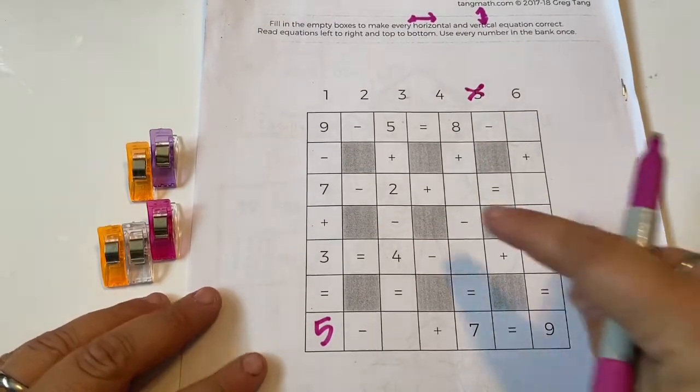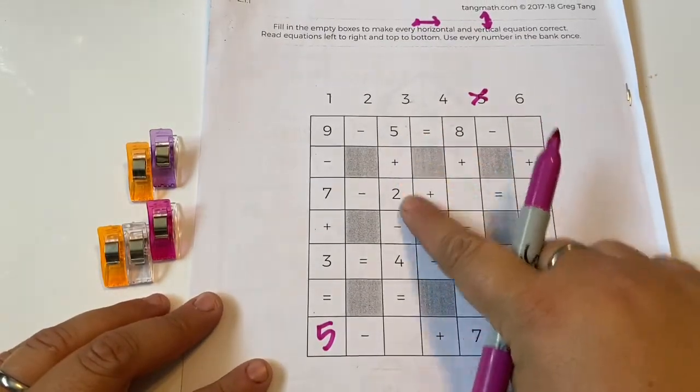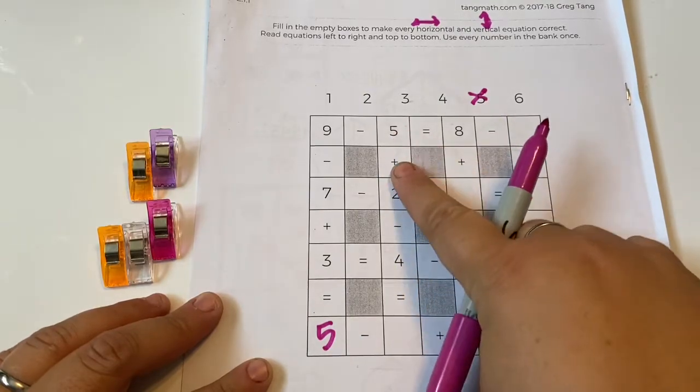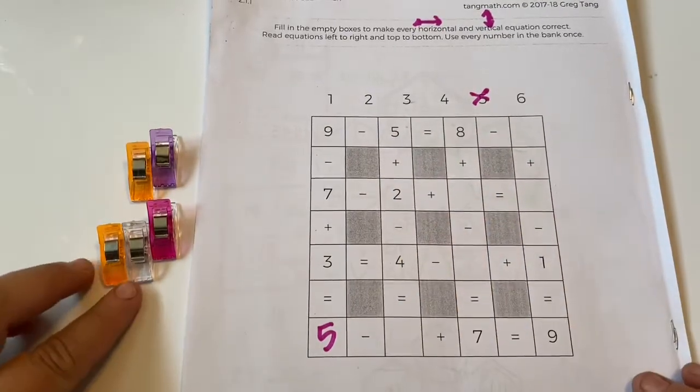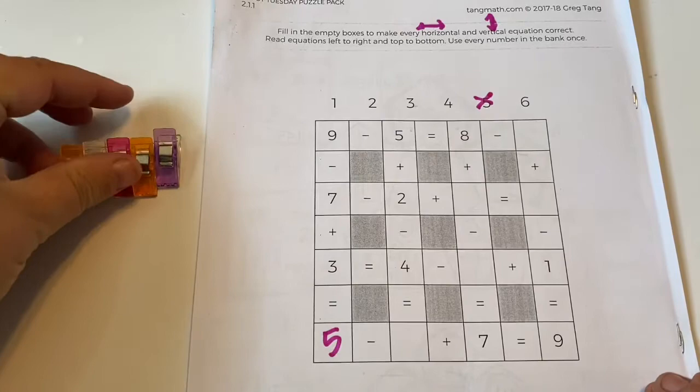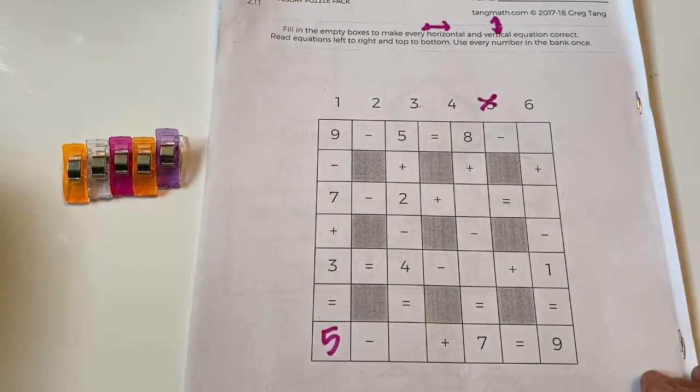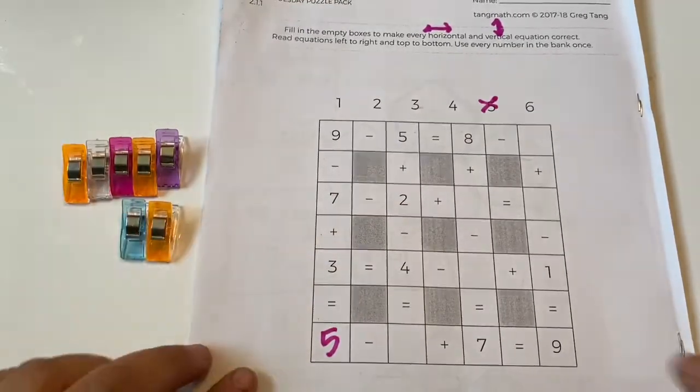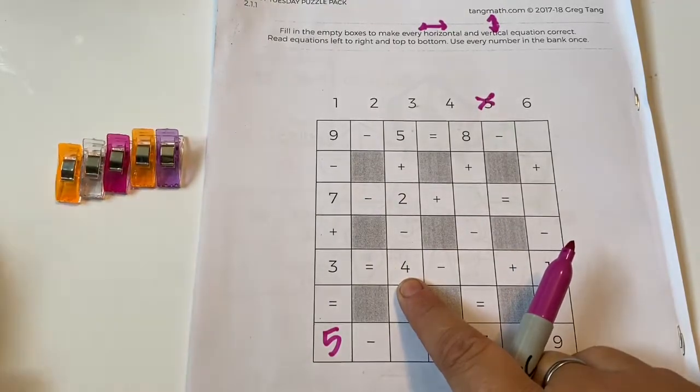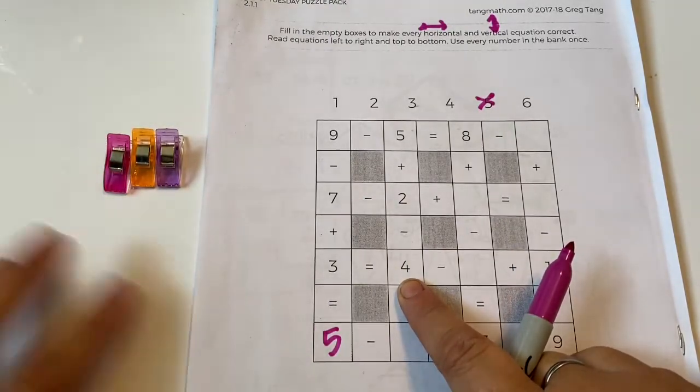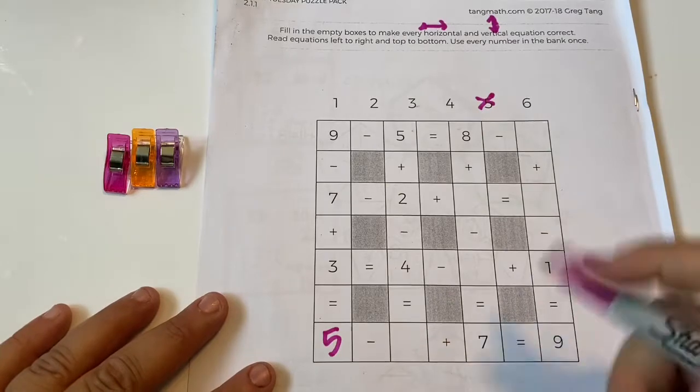Okay, so now I'm gonna go down again. Five plus two minus four. So there's my five. I'm gonna make a little row of five. Plus two, minus four. One, two, three, four equals three.